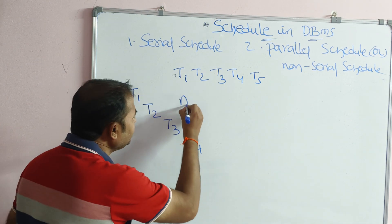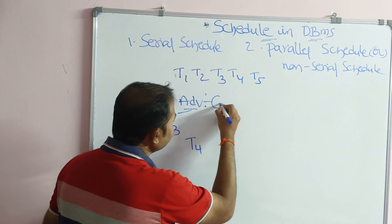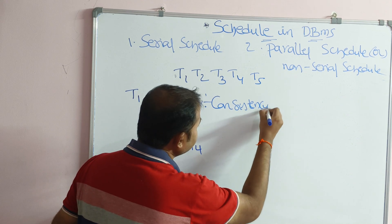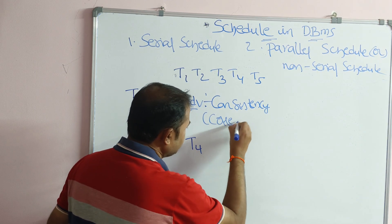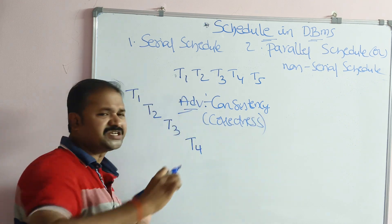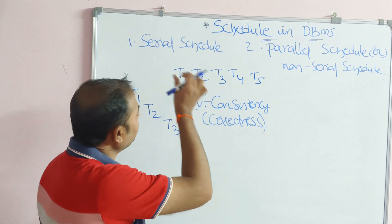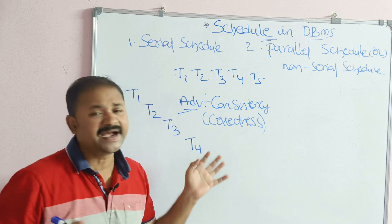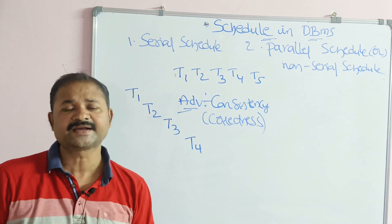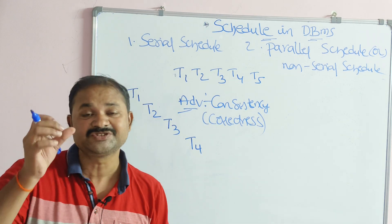The main advantage of serial schedule is consistency of the database. Consistency means correctness. If the transactions are executed without any error, then this serial schedule will give 100% correctness about the transaction execution.